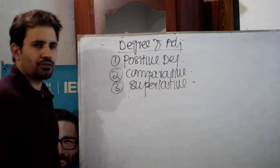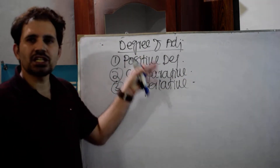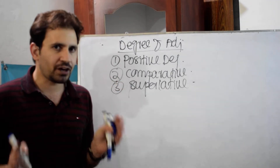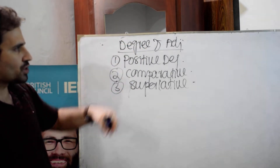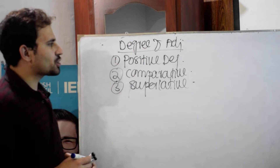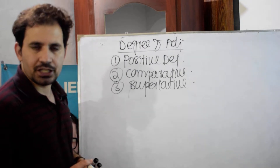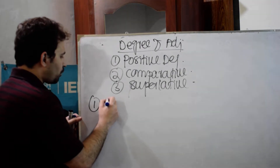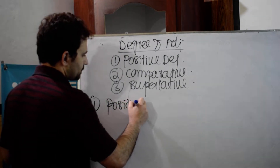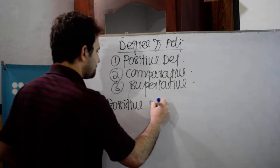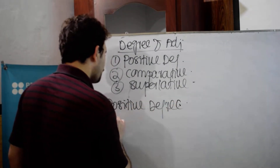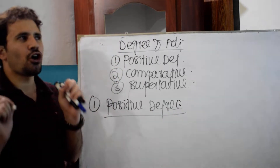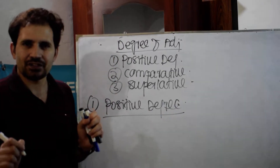So these are the three degrees of an adjective. Let's come towards the first one, which is called the positive degree of an adjective.